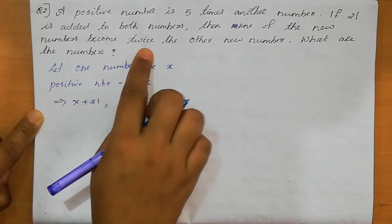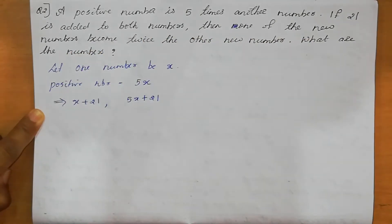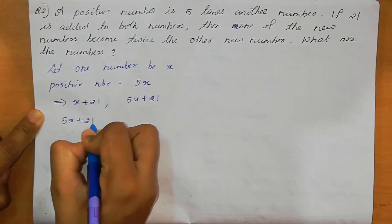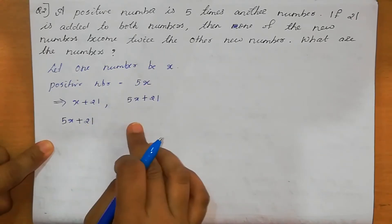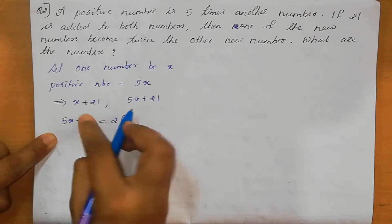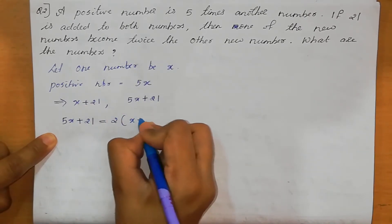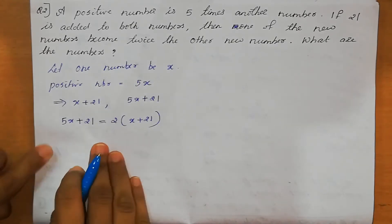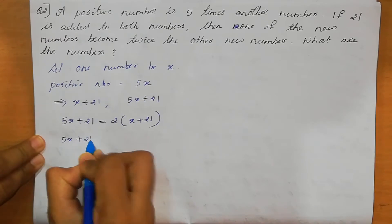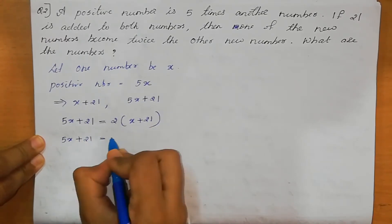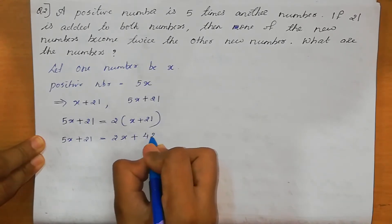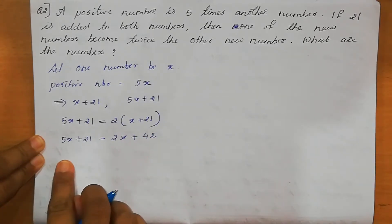Then one of the new numbers becomes 2 times the other number. So taking 5X plus 21: one of the new numbers is 2 times the other number, which is X plus 21. So: 5X plus 21 equal to 2 into X plus 21. Open the bracket: 2X plus 42. X numbers on one side and numbers on the other side.